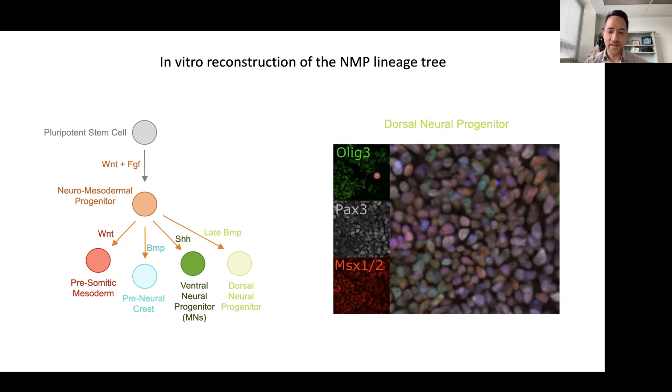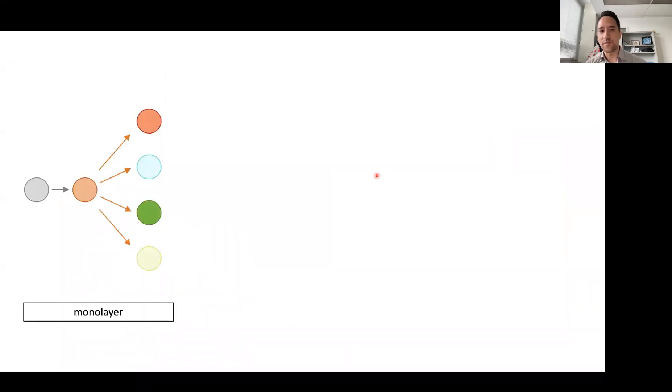This took a number of years to put together, but we're really happy with that result. Now that we have these monolayer protocols to derive these lineages, the next step I took was to try and experiment with 3D culture conditions. In this schematic, this shows how I've derived the individual monolayers of the different lineages.